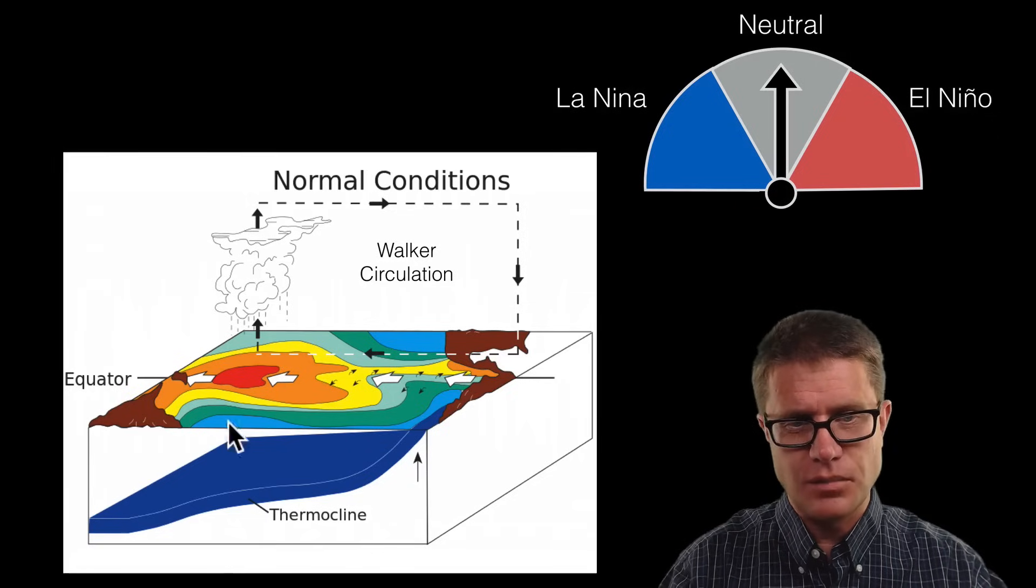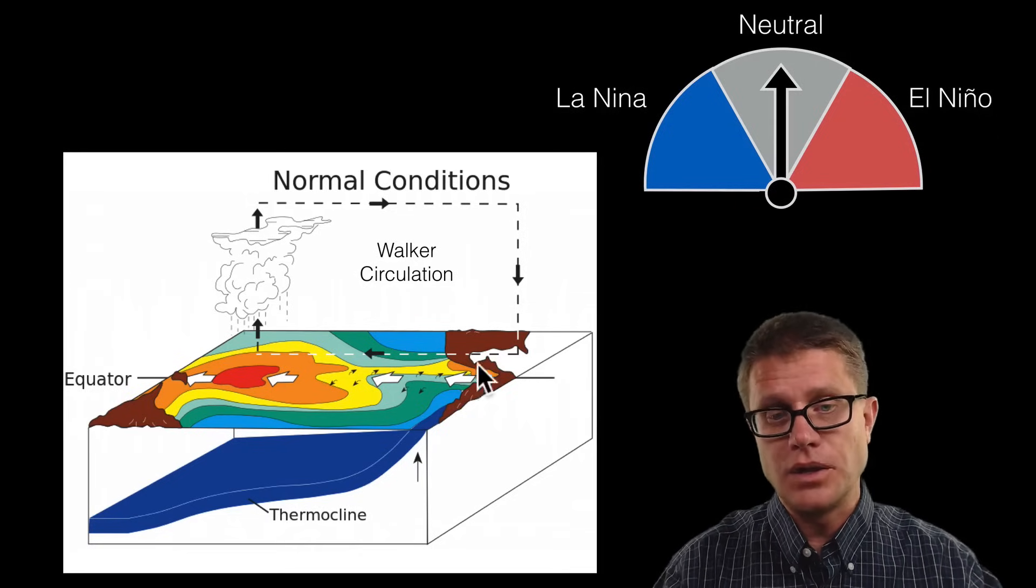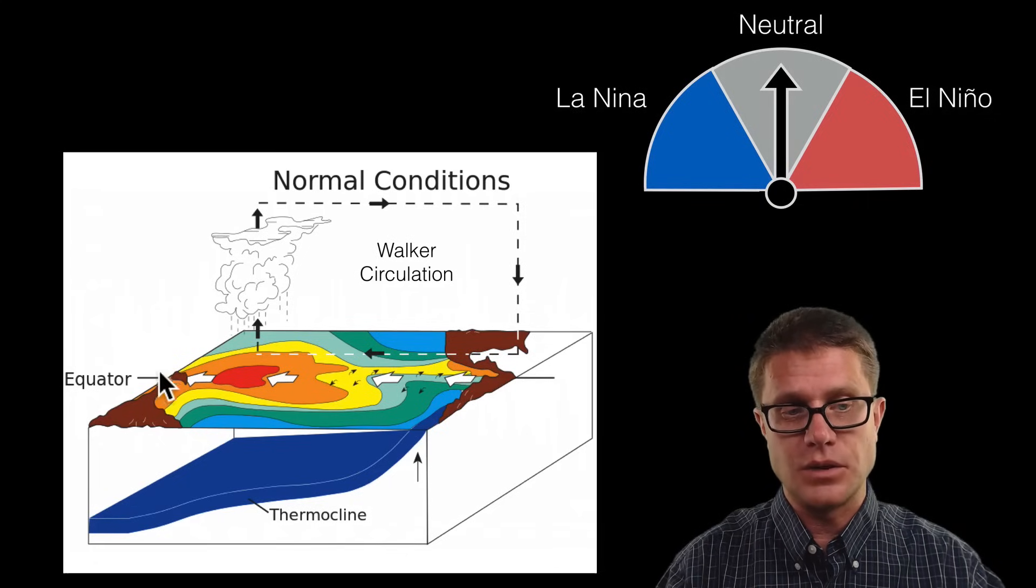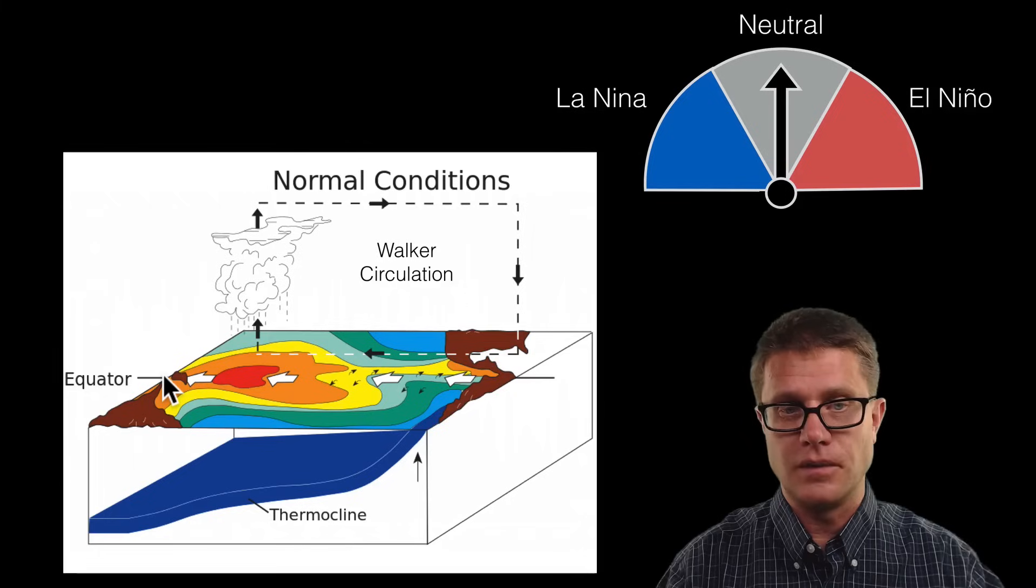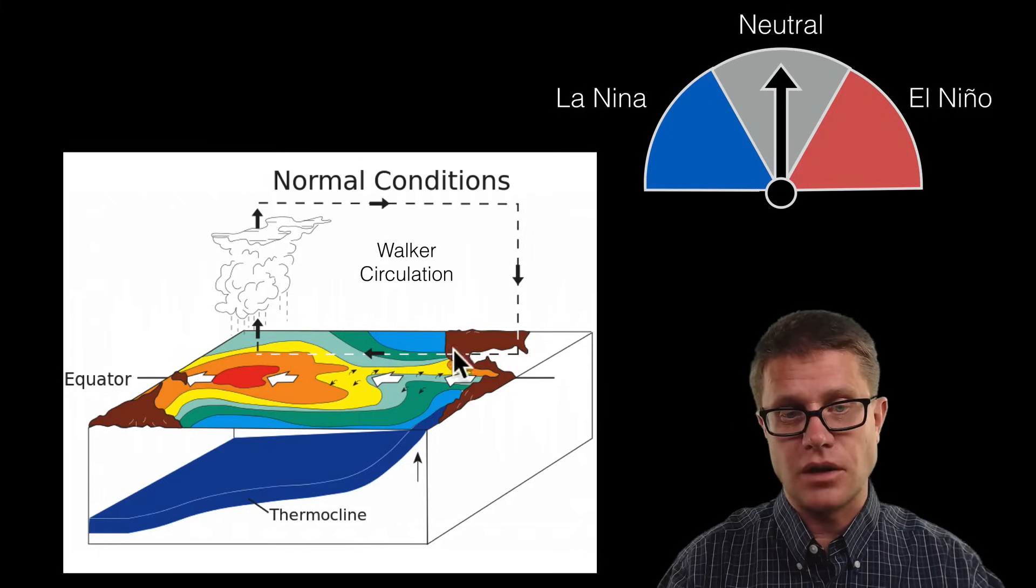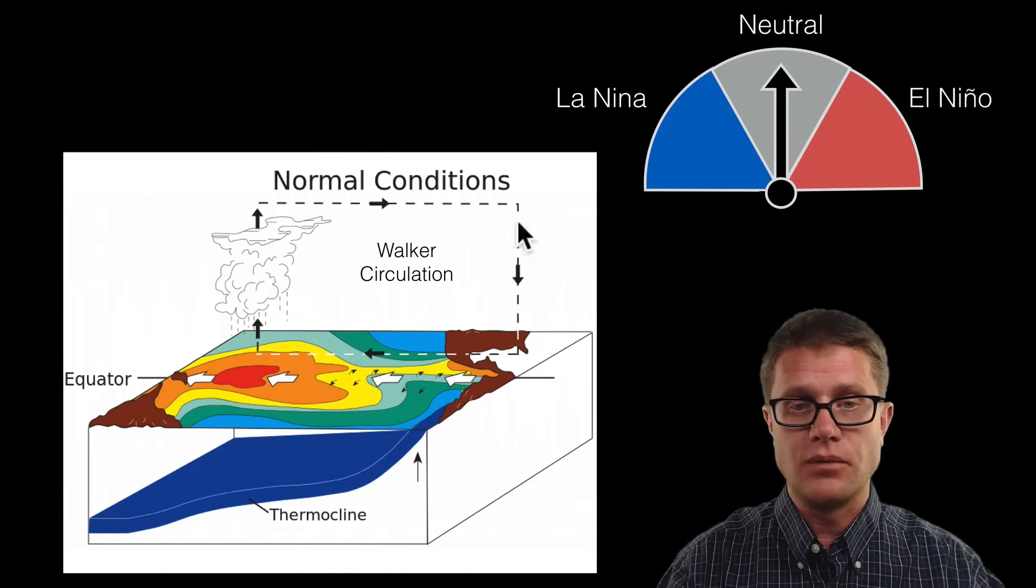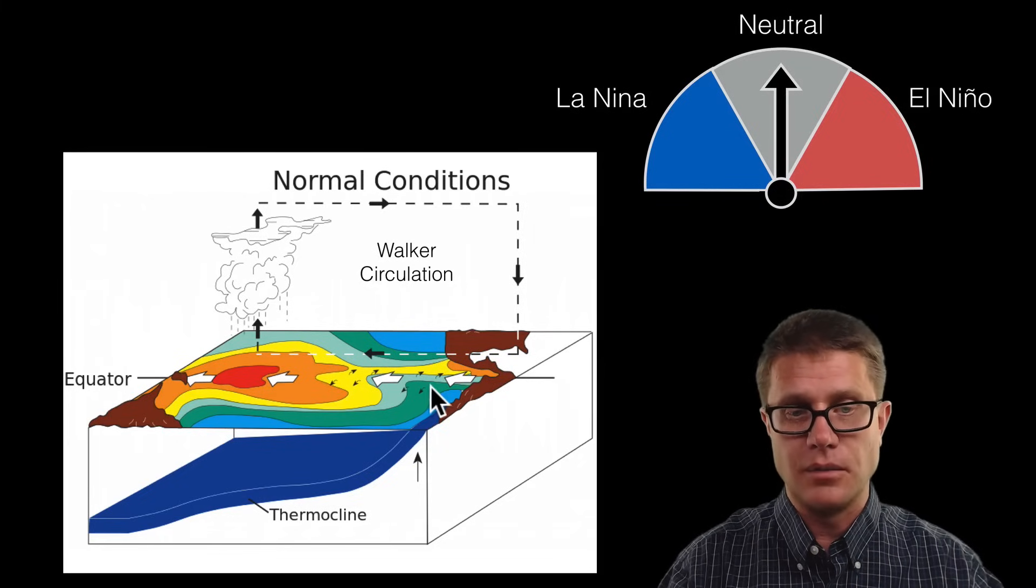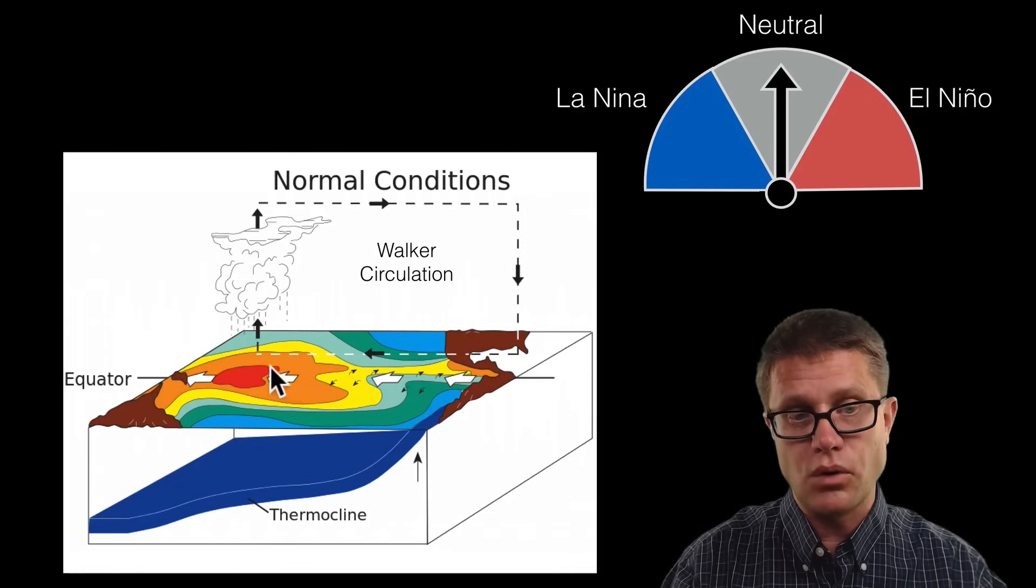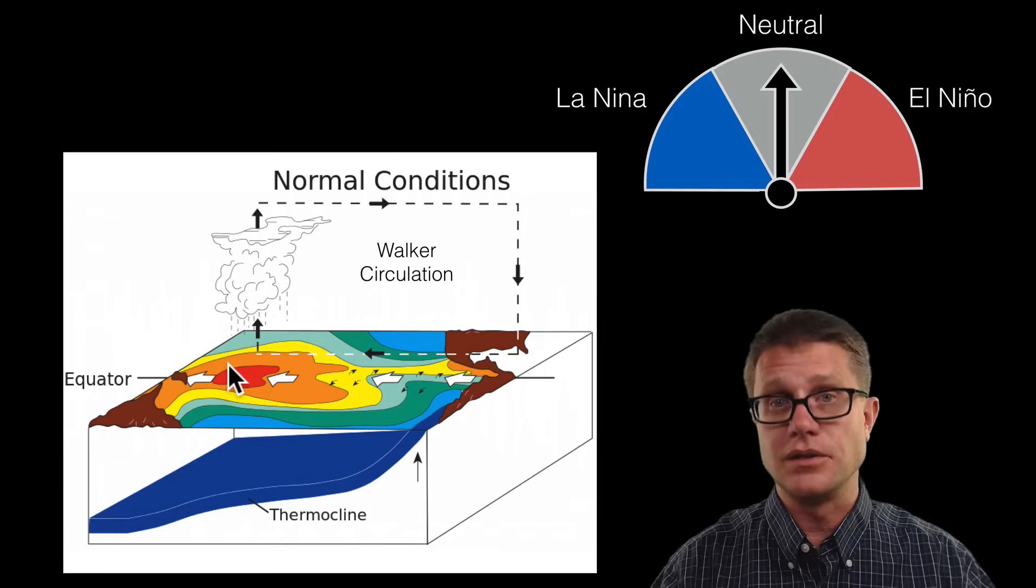Here we are looking at the Pacific Ocean. This would be Central America, South America, North America. And all the way on the other side of the Pacific is Australia. What we have is a walker circulation. Remember the trade winds are blowing the wind in this direction along the equator. As they do that we get a circulation pattern that moves the ocean water. Cold water here, it is pushing the warm water to the western Pacific. This is the neutral or the normal position.